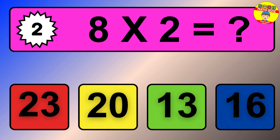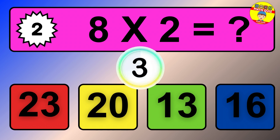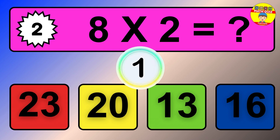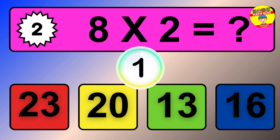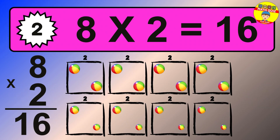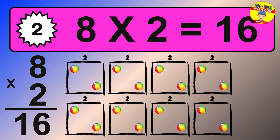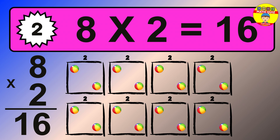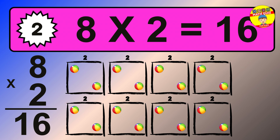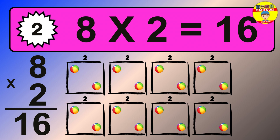Question 2. 8 times 2 equals what? The answer is 8 times 2 is 16. To calculate, we have 8 groups with 2 balls each one. So how many balls do we have? 16 balls.